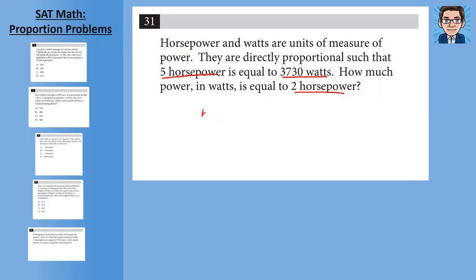So we're going to set up horsepower in the numerator and watts in the denominator. So we've got 5 horsepower, 3,730 watts. And that's going to equal 2 horsepower and an unknown number of watts. Cross multiply. 5 times x equals 3,730 times 2, or 7,460. Divide both sides by 5, and you get x equals 1,492 as your answer.